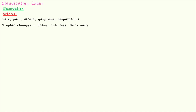As with all exams, you first start off with observations, and we'll talk about observations and differentials together. The first possible cause is arterial causes or arterial insufficiency, and if that's the case, you're likely to see pale limbs.